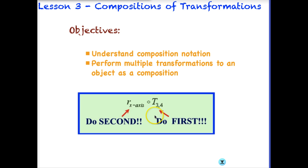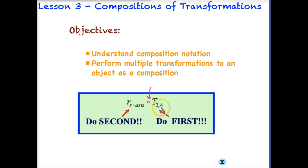Notice that we now have a notation to help understand what we want to do. This circle right in the middle means we're performing a composition. When we see a composition, we always work from the back to the front. This 't' is a translation, moving in the positive direction 3 for x and positive direction 4 for y. This little 'r' means it's a reflection — you can tell by the subscript 'x-axis' — we are going to reflect over the x-axis.